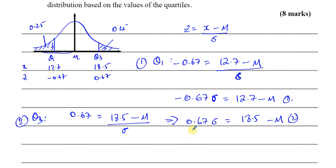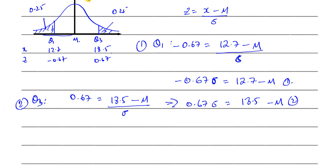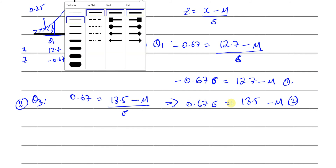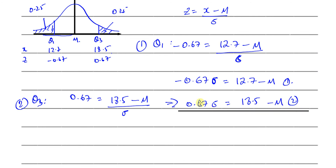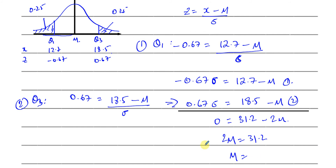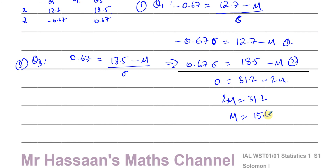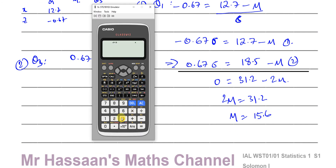Adding the two equations eliminates sigma, leaving 0 equals 12.7 plus 18.5 minus 2 mu, which is 31.2 minus 2 mu. So 2 mu equals 31.2, therefore mu equals 31.2 divided by 2, which gives mu equals 15.6 minutes.